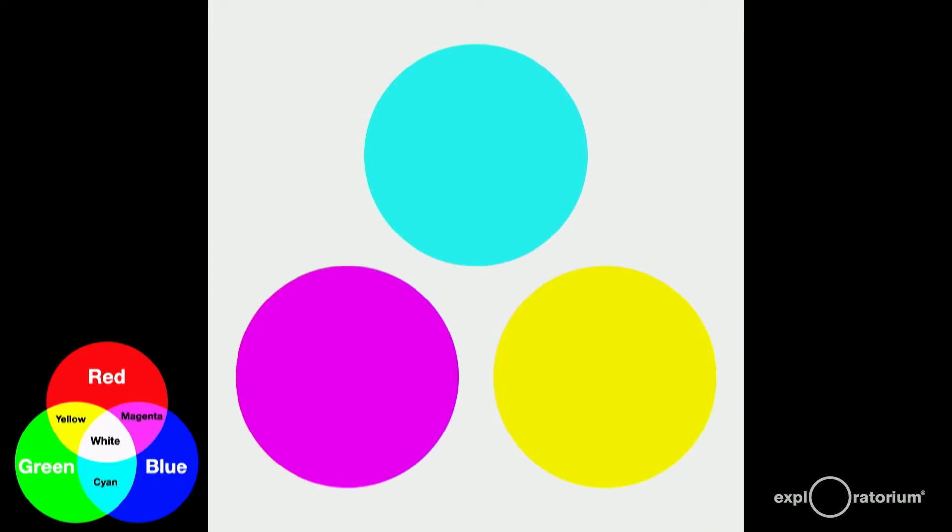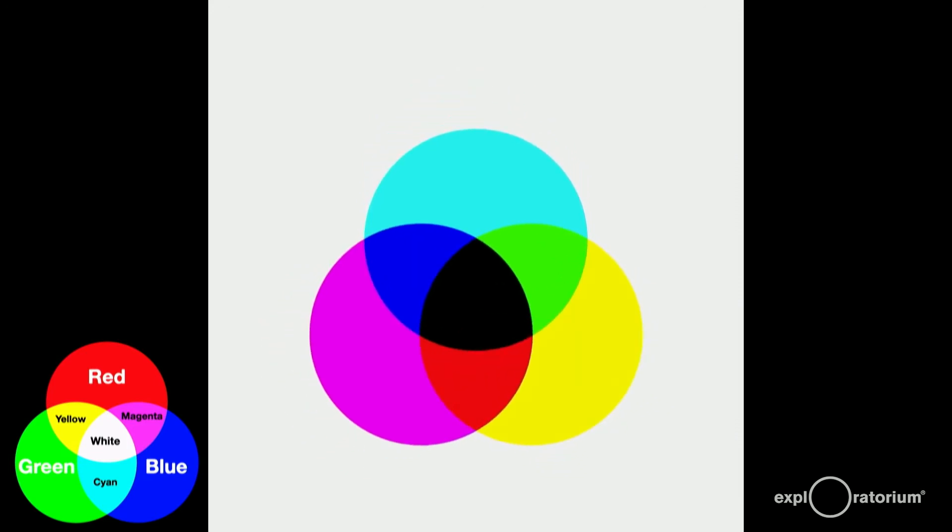What happens when we mix all three together? Cyan plus magenta plus yellow is the same as taking away red, green, and blue. When you take away all three, you get, not surprisingly, black.